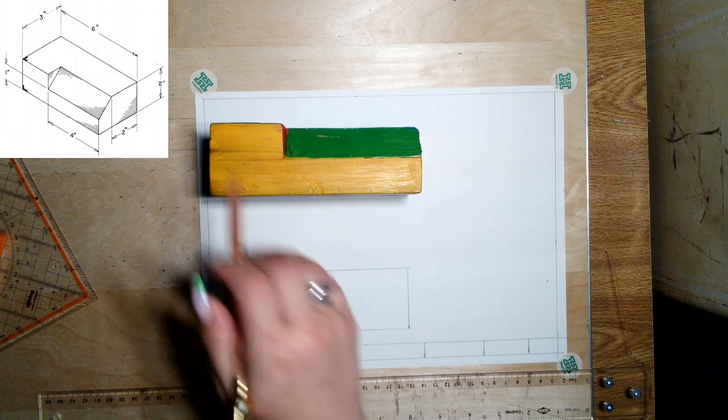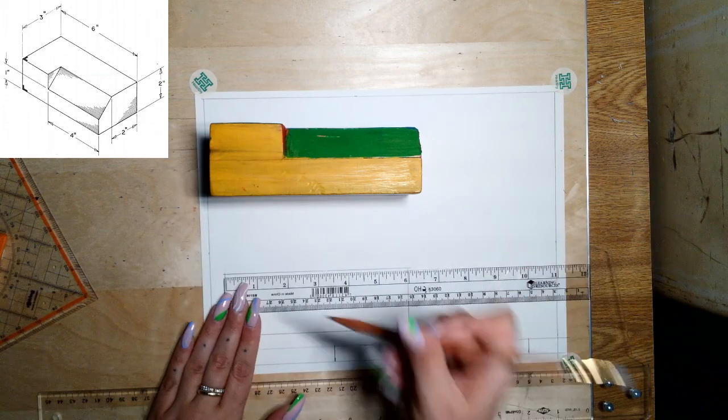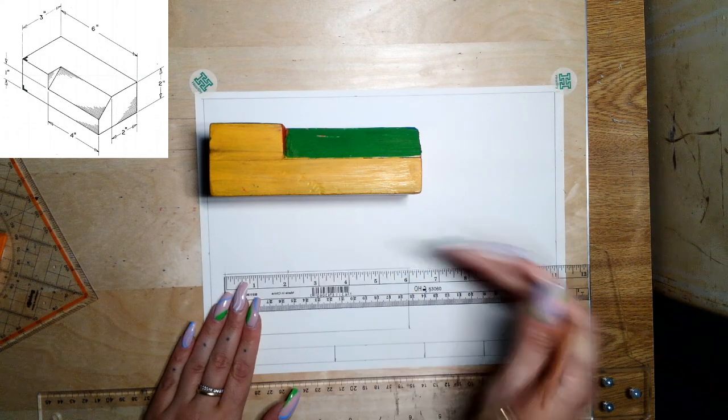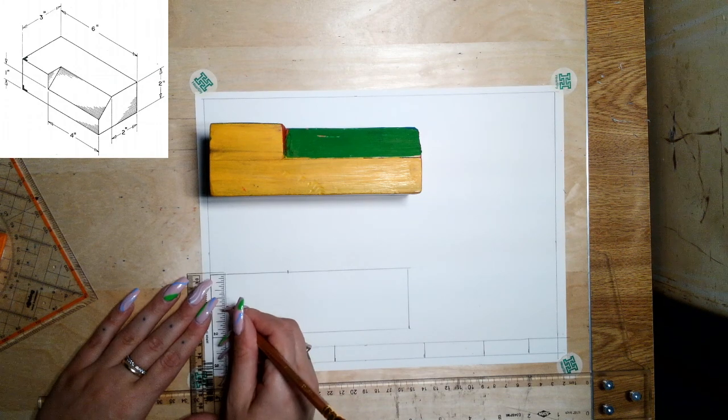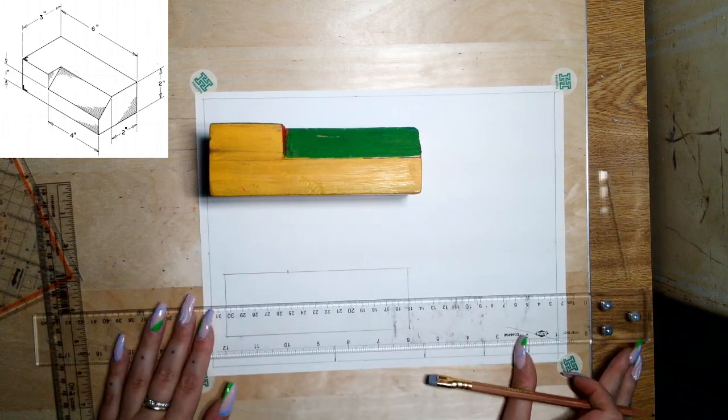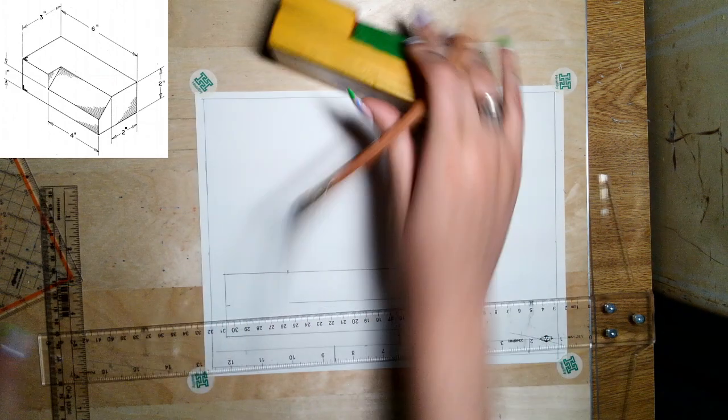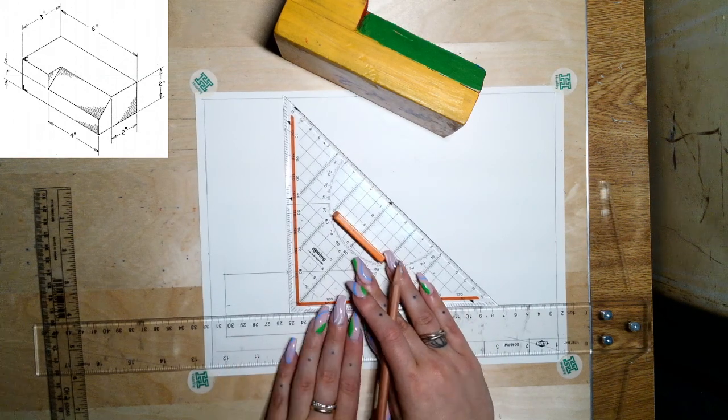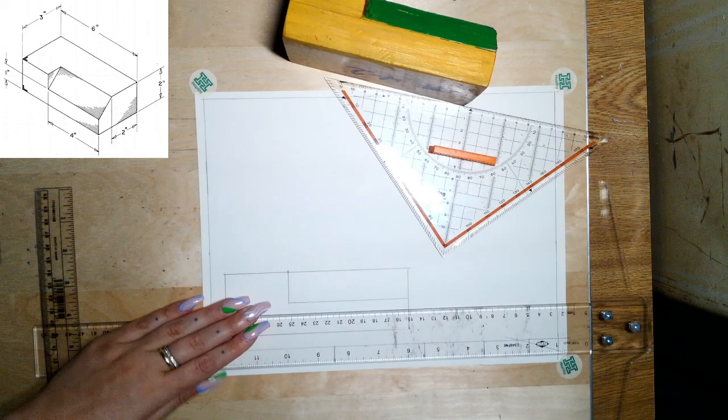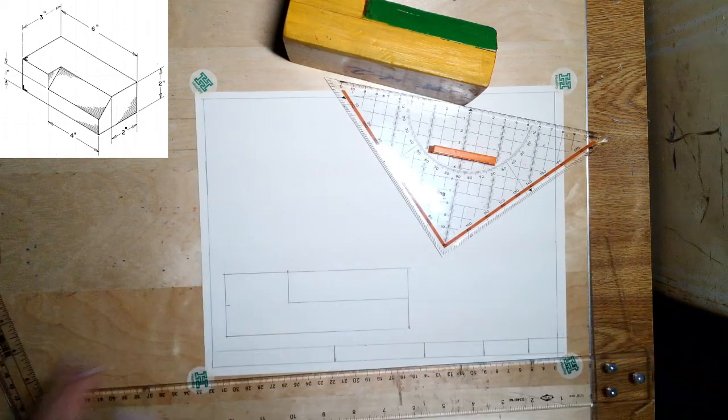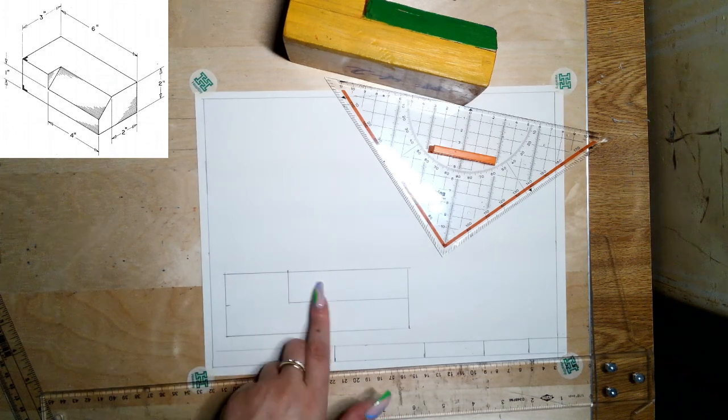So in the front view, we're going to measure how far over it is where this incline stops. So it's two inches over and as well as how far down it goes and it goes one inch down. We'll just put some marks in over at two and at one. In the front view, that's how it's going to appear. We're not going to see anything regarding that actual slope, but we are just going to see that there's a difference between this face here and this face.